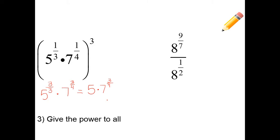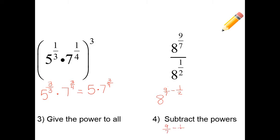On number 4, do you remember what we did when we had like bases on the top and the bottom? We had to subtract the powers. So I'm going to subtract the powers: 8 to the 9/7 minus 1/2. I need a common denominator to subtract these fractions: 2 times 9 gives me 18 over 14, and 7 times 1 gives me 7 over 14. So 18 minus 7 equals 11, over 14. I should have 8 to the 11/14.